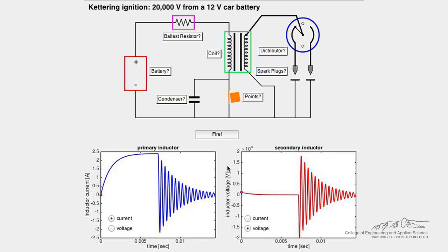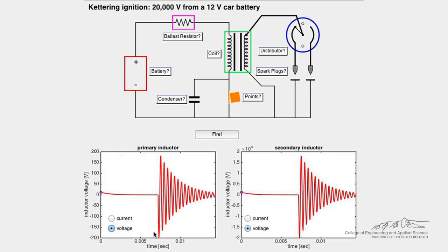This abrupt change induces a large voltage across the primary inductor. Because the coil is a transformer, this voltage is amplified to be even larger voltage across the secondary inductor.